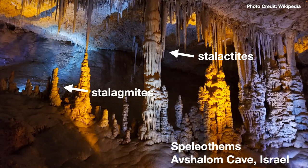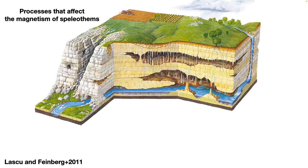Here is a beautiful image of a cave in Israel showing stalagmites and stalactites. There are a few processes that overall affect the magnetism of speleothems. This figure from Feinberg 2011 beautifully highlights and illustrates all the processes present in caves — from the soil all the way to the inside of the speleothem — and how those processes effectively regulate the magnetic record deep within the speleothem.